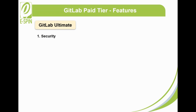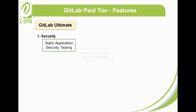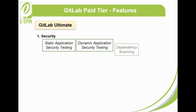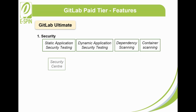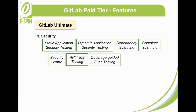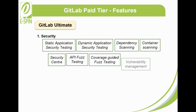1. Security. GitLab Ultimate weaves security into the pipeline to provide early and actionable feedback to the development team with static application security testing, dynamic application security testing, dependency scanning, container scanning, security center, API fuzz testing, coverage-guided fuzz testing, and vulnerability management.